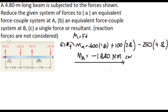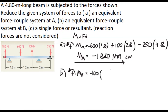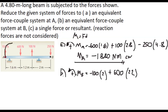For part B, we need an equivalent force-couple system at B, meaning we compute the moment at point B. We again assume that the moment at B is positive if counterclockwise. Since point B is our reference point, we neglect the 250 Nm couple there. The upward 100 N force would cause clockwise rotation, so it is negative: negative 100 times its perpendicular distance of 2 meters. The 600 N force causes counterclockwise rotation, so it is positive: 600 times 3.2. The 150 N force causes clockwise rotation, so it is negative: negative 150 times 4.8.